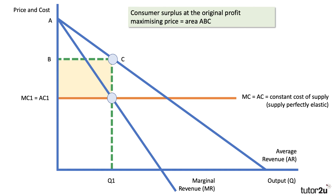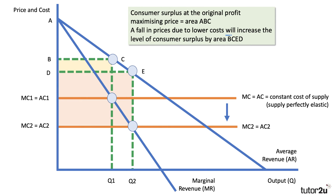Consumer surplus at the original profit-maximizing price P1 is area A, B, C. The yellow area is super normal profit. That fall in costs brings the price down, and the fall in prices due to lower costs will increase the level of consumer surplus by area B, C, E, D. So in theory, monopsony power can help both producers and consumers.